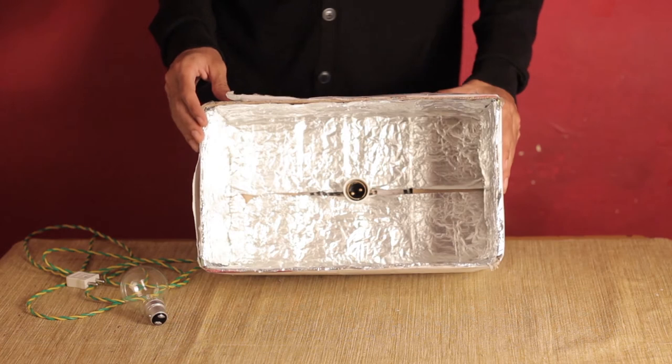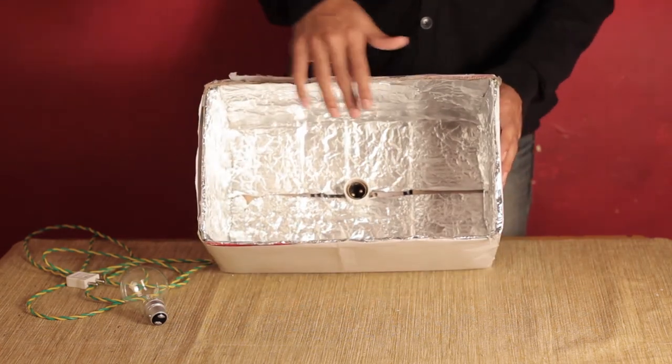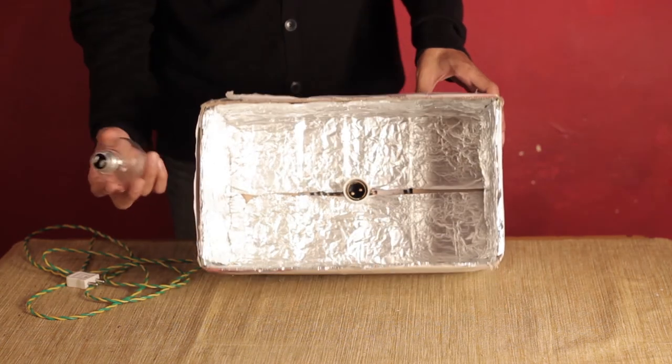So by now you should have a box with one side open, the bulb holder in place, and all the sides of the box covered with aluminum foil. The next thing you do is attach the bulb in the bulb holder.